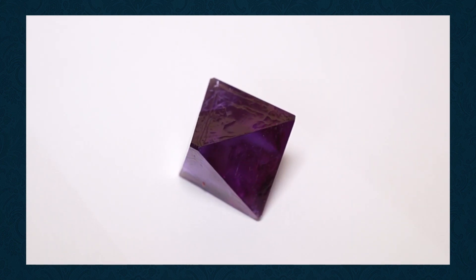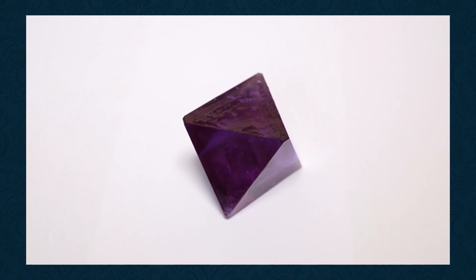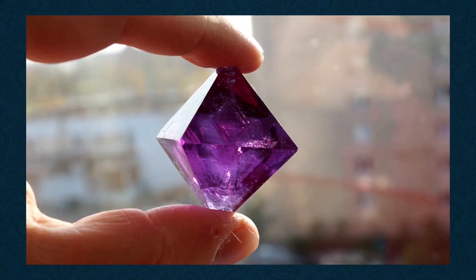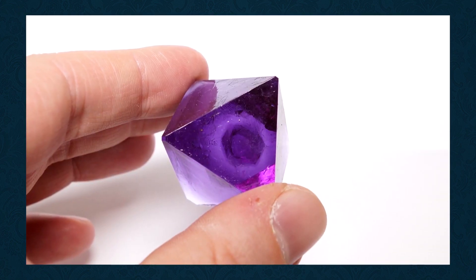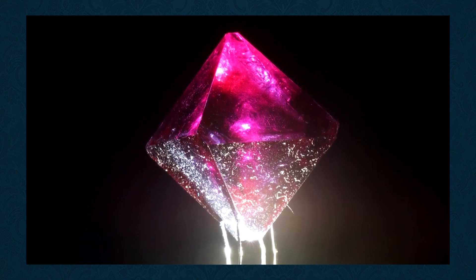A crystal form consists of a group of faces that have the same arrangement of atoms. Thus, the number of faces in a form depends on the symmetry of the crystal.